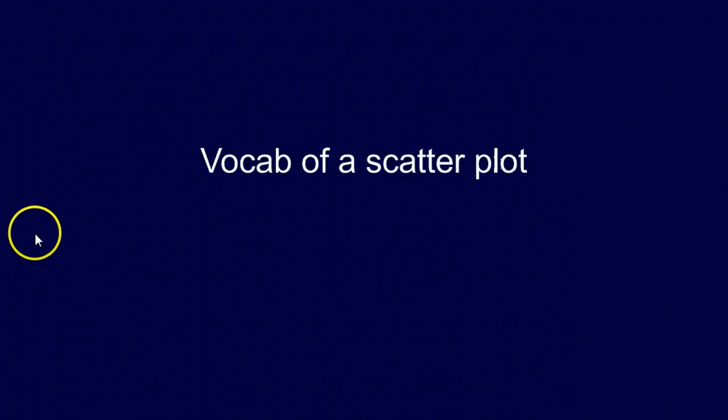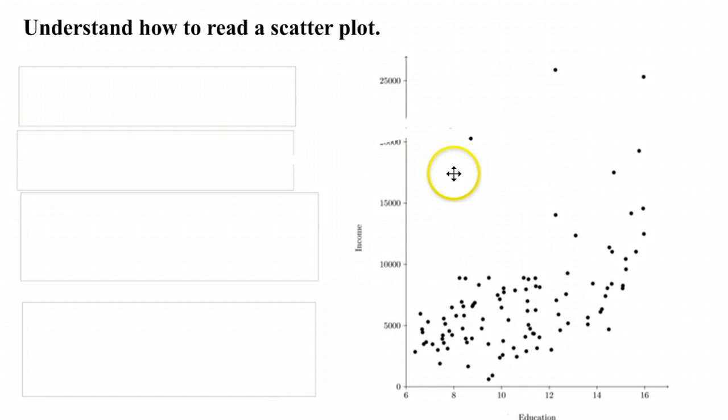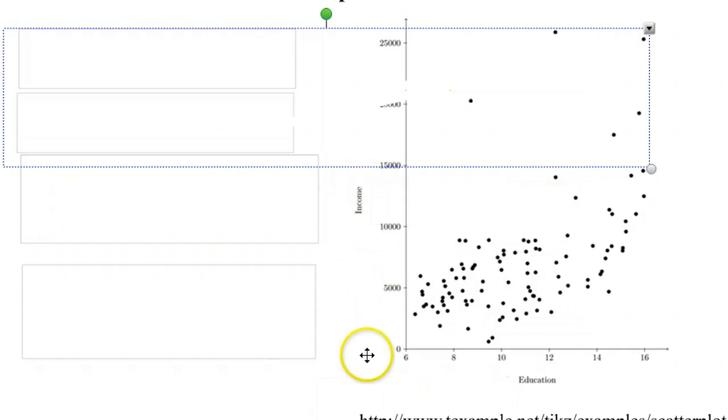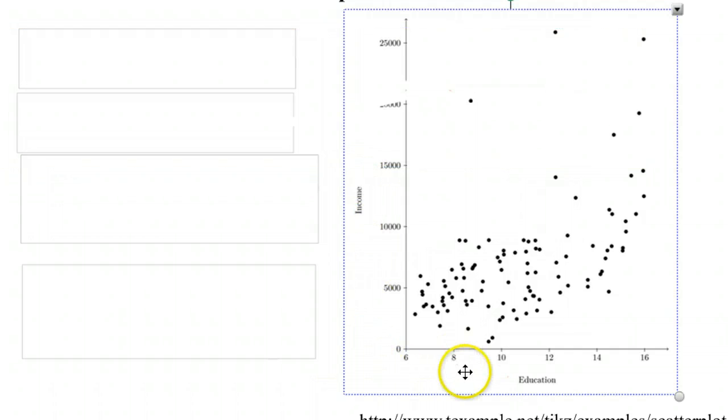Let's go through the vocabulary of reading and setting up a scatter plot. If you look at the plot here on the right, there's a few main elements that we want to look at first.